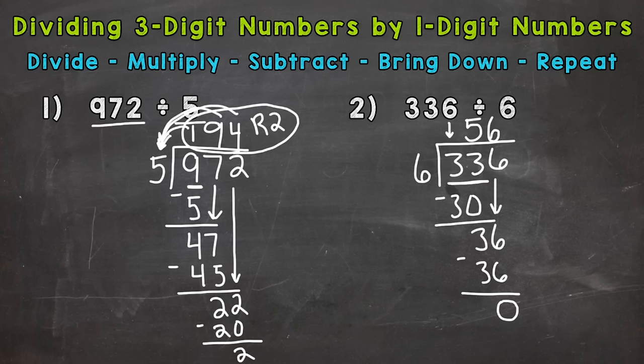And we end up with zero. So we do not have a remainder for number two. It worked out to be a whole number. And our answer is 56.